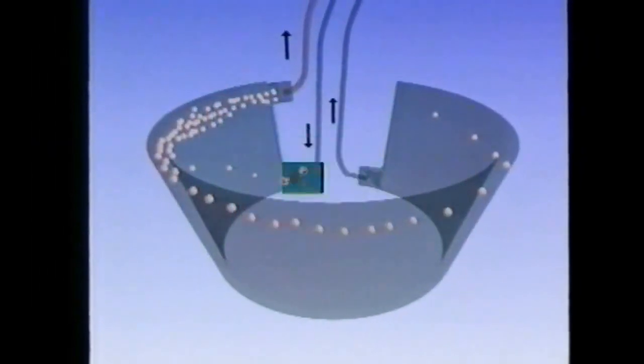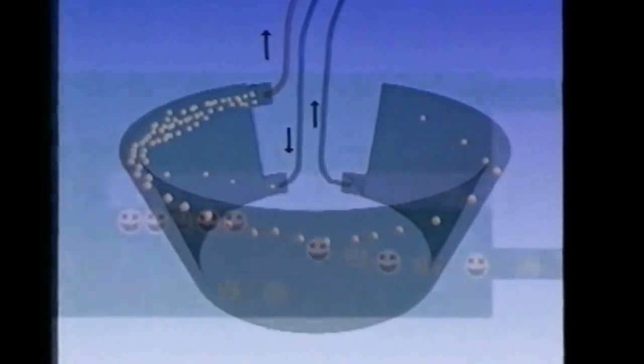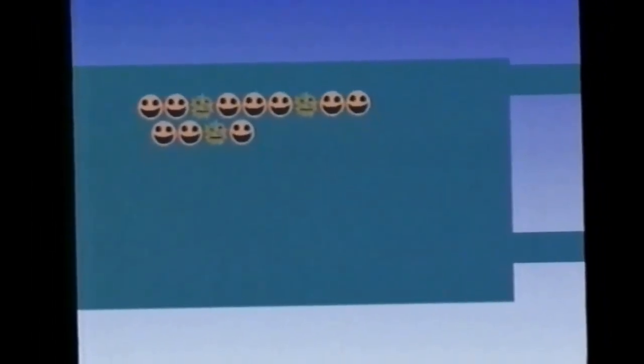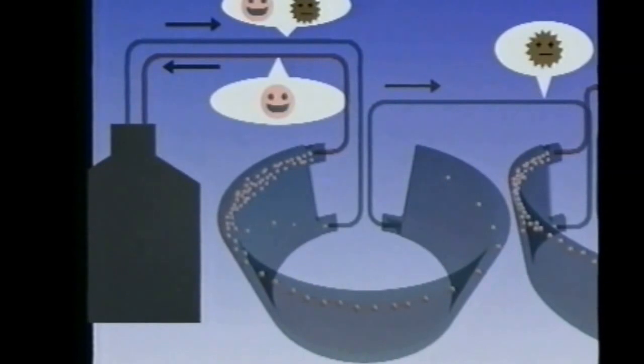As dead cells settle slightly slower than live ones, the Centritech cell can actually be set up to return all of the live cells to the fermenter, while a portion of the dead cells are discharged with the supernatant.